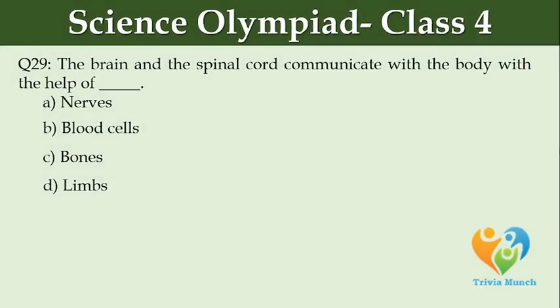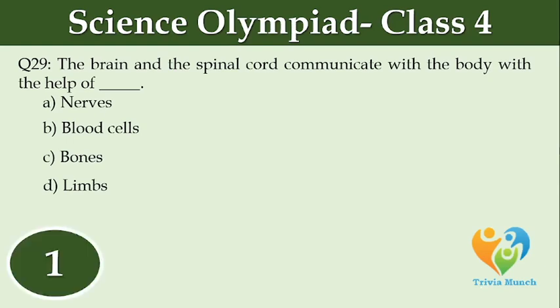The brain and the spinal cord communicate with the body with the help of dash. Option A: nerves. Option B: blood cells. Option C: bones. Option D: limbs.